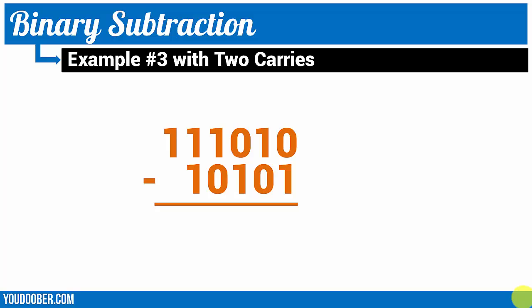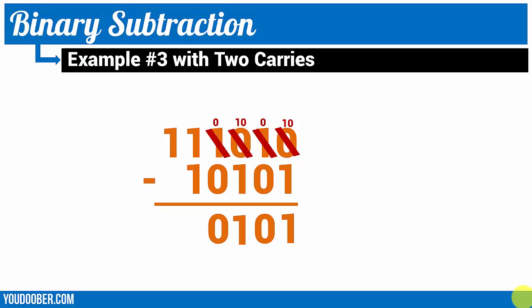Now let's do an example with two carries. So 0 minus 1 requires a carry — we knock off that 1, giving us a 0, and make that 0 a 10. 10 minus 1 is 1. 0 minus 0 is 0. Here we have a second carry, so we borrow from the next column, make that a 0, make our 0 a 10. 10 minus 1 is 1. 0 minus 0 is 0. 1 minus 1 is 0. And bring down that last 1.